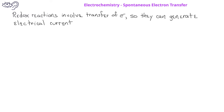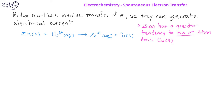Consider the spontaneous redox reaction in which zinc metal reacts with aqueous copper two plus ions to produce aqueous zinc two plus ions and copper metal. If we were to put a piece of zinc metal into a solution of copper ions, the greater tendency of zinc to lose electrons results in the zinc being oxidized and the copper ions being reduced. In this case, electrons are transferred directly from the zinc metal to the copper ions.